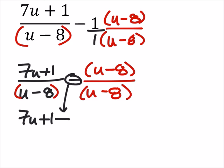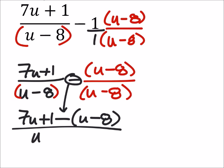We got 7u plus 1, and that's minus from here, that's a u minus 8, which we do need to put in parentheses because we're subtracting u and a minus 8. And in the denominator, it's just a u minus 8 because it's a common denominator.